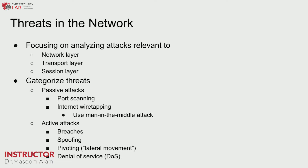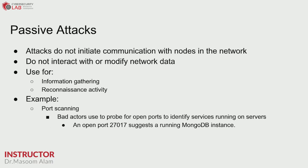Passive attacks are those attacks which do not initiate any communication with nodes in the network — they don't interact with or modify the network data. Passive attacks are primarily used for information gathering or reconnaissance activity. For example, someone doing port scanning to see whether a MongoDB instance is running in the network. If they find an open port 27017, the likelihood is that a MongoDB instance is running on the network.